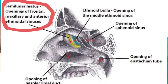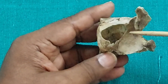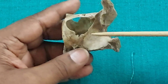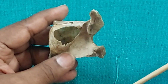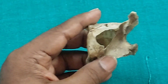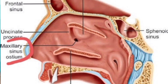The ostium is located close to the roof of the sinus, not at the floor. This creates a disadvantage for drainage of the maxillary sinus. Therefore, drainage is dependent on the mucociliary escalator, which moves secretions toward the ostium, allowing them to pass into the middle meatus of the nose.